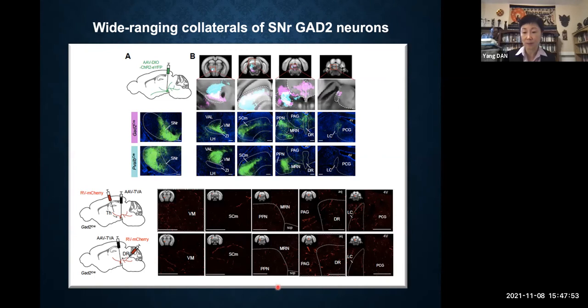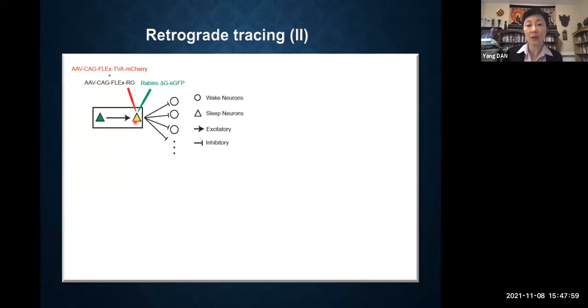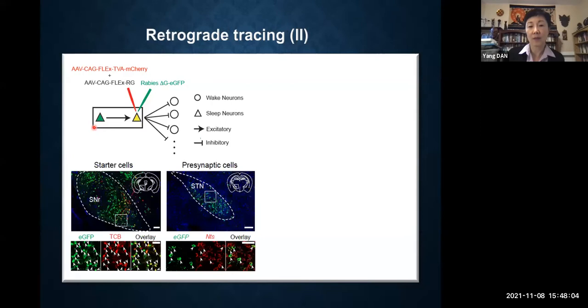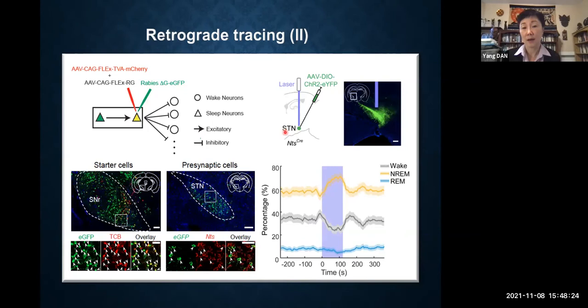The main glutamatergic input to the SNR comes from the subthalamic nucleus, the STN. These STN neurons are glutamatergic and also express neurotensin. Using neurotensin as a specific marker in this region — since VGLUT2 is too broadly expressed — when we activated the neurotensin neurons in the STN we again saw an increase in non-REM sleep.